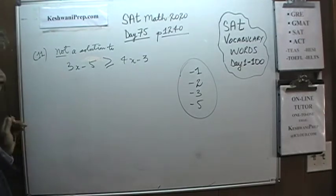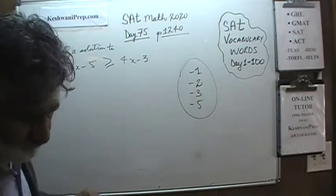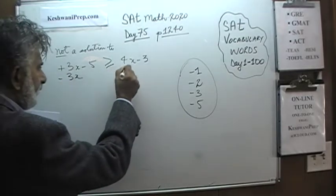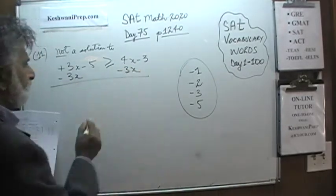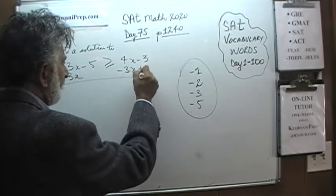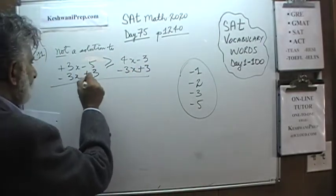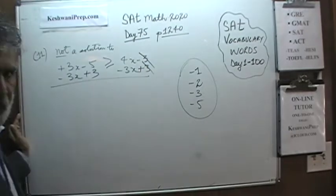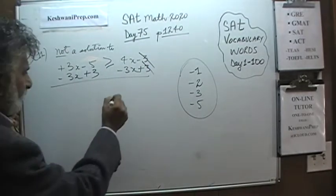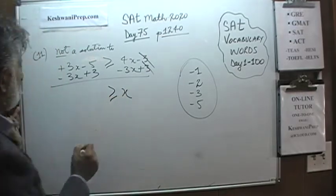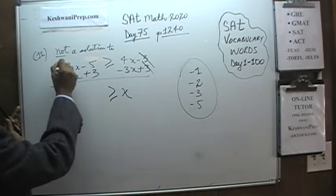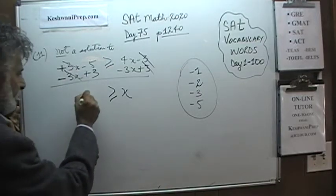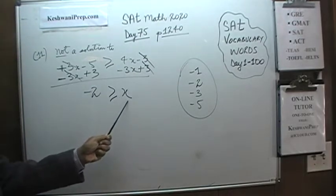Let's work through it. We have a positive 3 here. Let's subtract 3x from one side and bring it over, and add 3 to both sides. That will get rid of the negative 3 and positive 3. Here we end up with 4x minus 3x, which is 1x, greater than or equal to — the 3x terms drop out — and here we have negative 2, negative 5, and positive 3, which gives us negative 2. So it says negative 2 is greater than or equal to x.